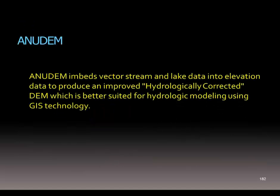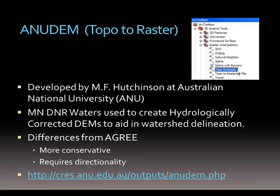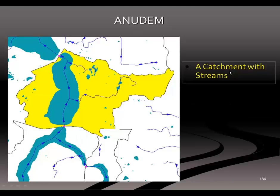A new DEM using the topo-to-raster approach is better suited for hydrological modeling in GIS because it's a blend of the vector and raster process. It was developed at Australian National University and is used with the Minnesota DNR. You see it in ArcGIS as the topo-to-raster tool.